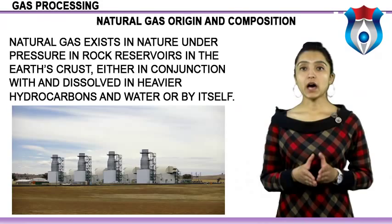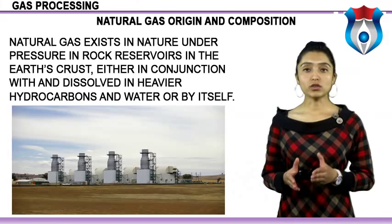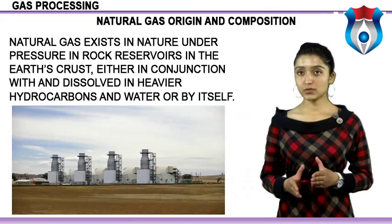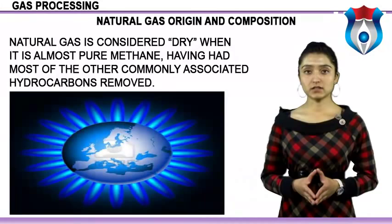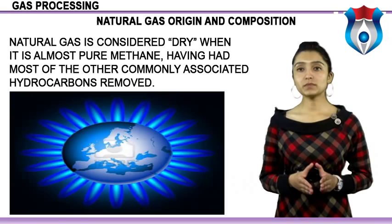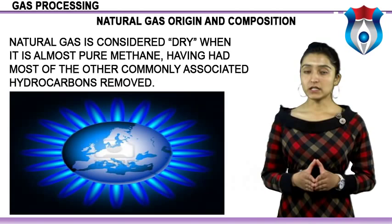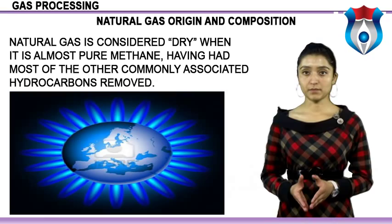Knowing whether a natural gas show is biogenic or thermogenic can have critical implications for the presence of liquid hydrocarbons in a basin; gas geochemistry readily reveals this distinction. Natural gas is considered dry when it is almost pure methane, having had most other hydrocarbons removed. When other hydrocarbons are present, the natural gas is wet. The composition of natural gas varies depending on the field formation or reservoir from which it is extracted, and standard test methods exist to determine composition.